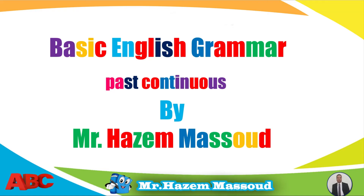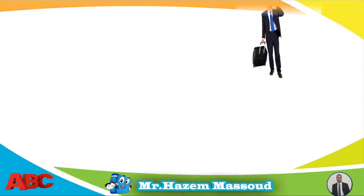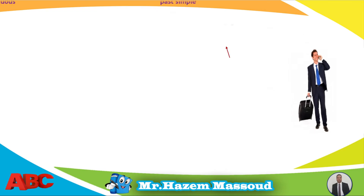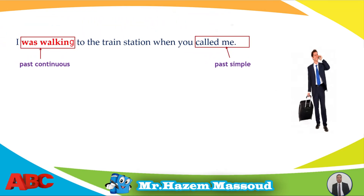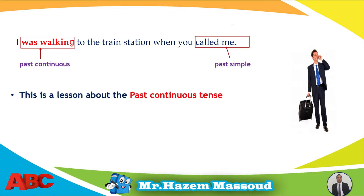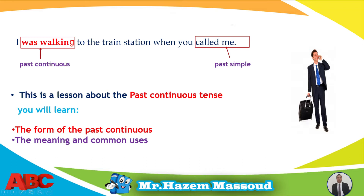Hello everyone! Today we'll study basic English grammar, past continuous. For example: 'I was walking to the train station when you called me.' Here, this is a past continuous tense, and in this sentence we also have a past simple tense. This is a lesson about the past continuous tense. You will learn the form of the past continuous and the meaning and the common uses of the past continuous.